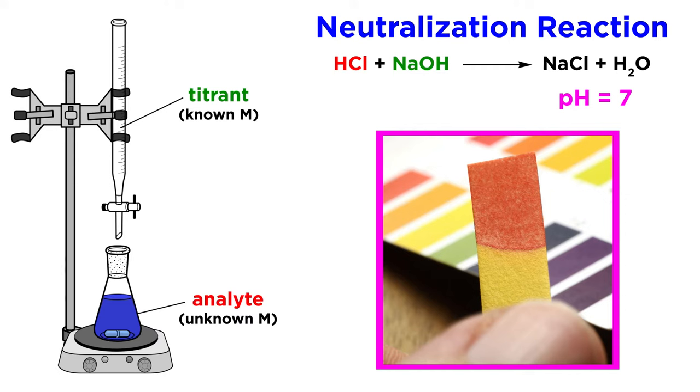For example, we have already learned that to get to the equivalence point of a titration between a strong acid and base, like HCl and NaOH, we can measure the pH until we reach a pH of 7, since precisely equimolar amounts of strong acid and strong base will leave only salt and water, which gives us neutral pH.